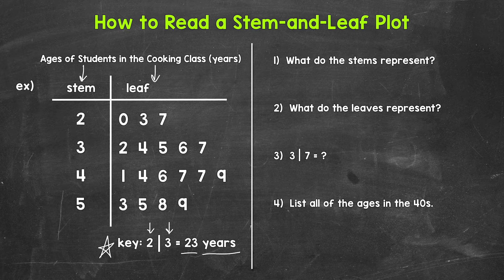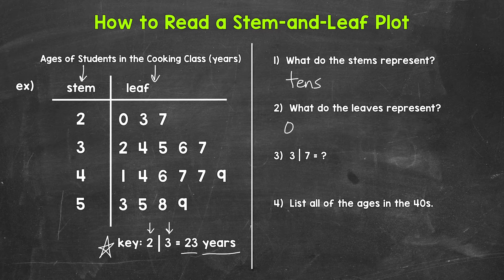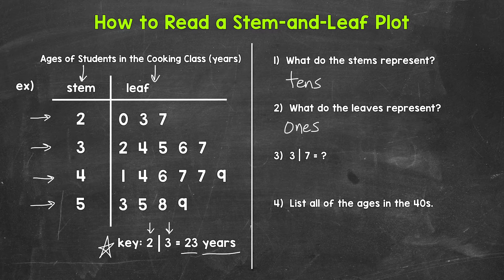So up here for number one, what do the stems represent? The tens place, the tens digit. And what do the leaves represent? The ones place, the ones digit. Looking at the stems, we have two, three, four, and five. So we have the twenties, the thirties, the forties, and the fifties.